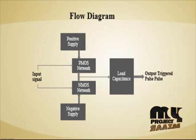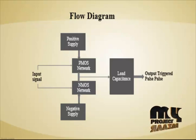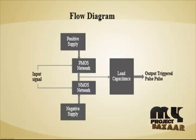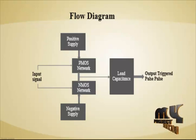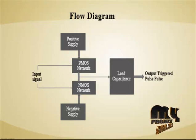Now we are going to discuss the flow diagram of our product. The Schmitt trigger design is implemented using the complementary metal oxide semiconductor device, that means CMOS device. CMOS is a combination of P-MOS and N-MOS devices. The Schmitt trigger circuit is implemented using a 6T concept, which uses six different transistors — a combination of P-MOS and N-MOS transistors.